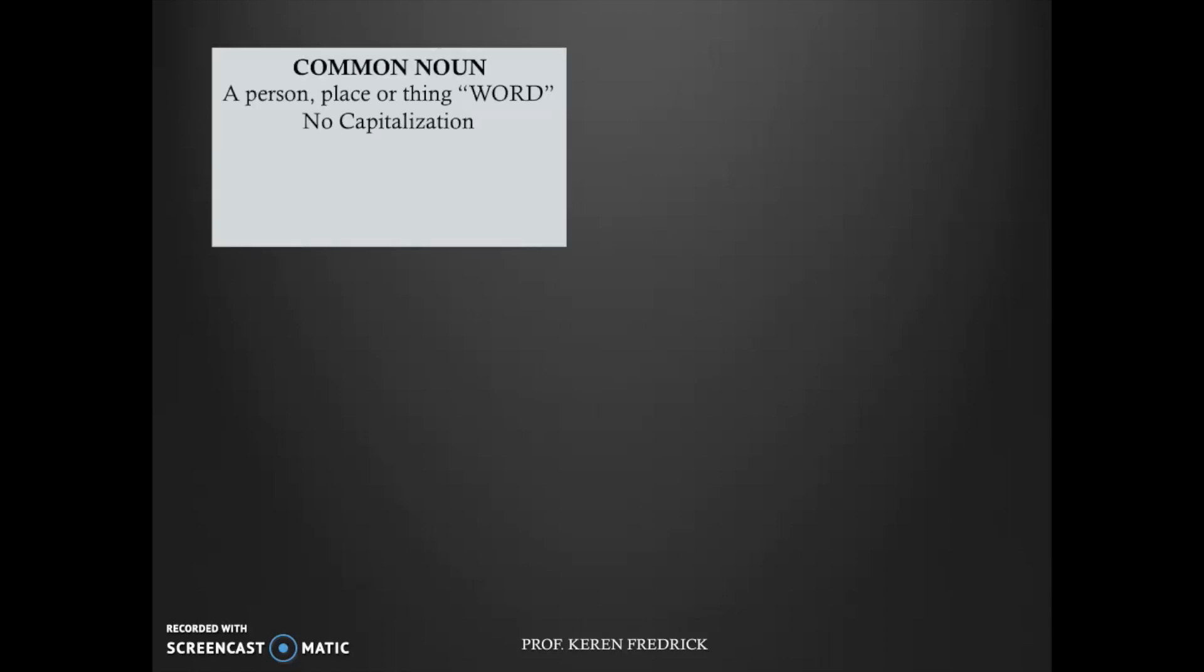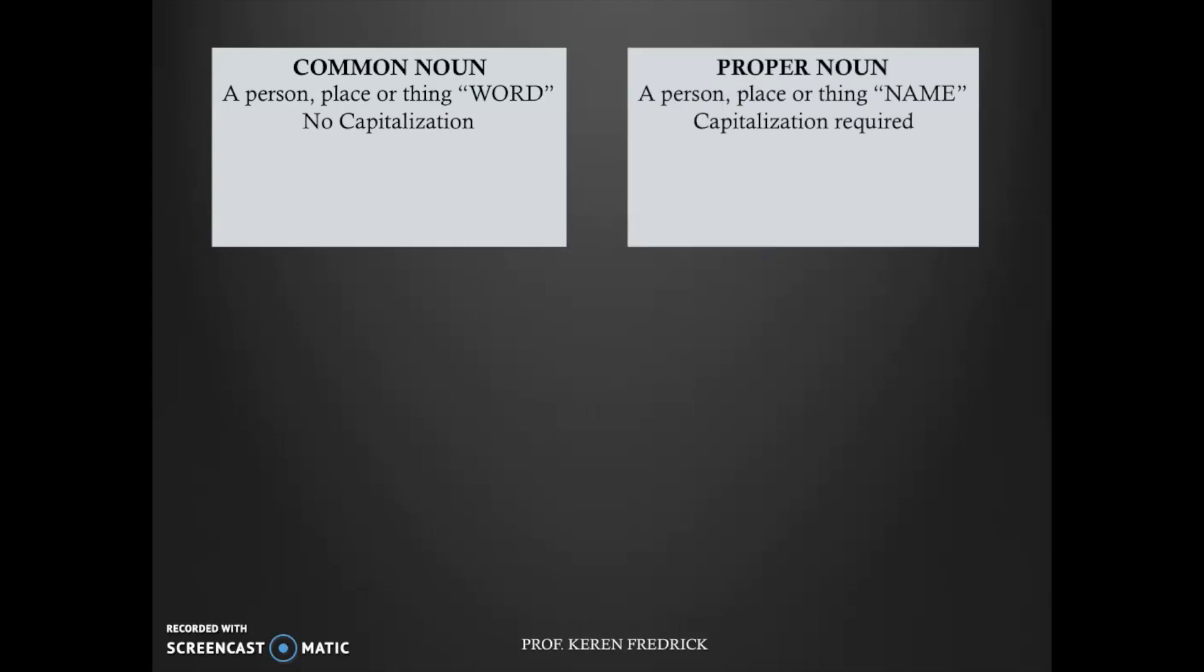Next, we're going to look at brain regions and involvement in words - what kind of words activate what kind of brain regions. Beginning with an understanding of common nouns: common nouns are a person, place, or thing identified as a word, so no capitalization is required. On the other hand, a proper noun is a person, place, or thing itself - it could be a name, so capitalization is required. Examples for common nouns could be girl, man, college, whereas examples for proper nouns could be Ruth, Vincent, Etharaj.